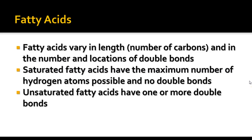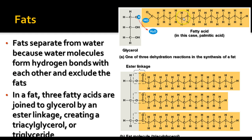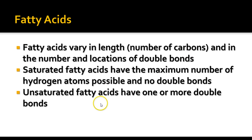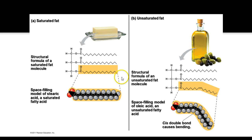Fatty acids vary in length by number of carbons, and also in the number and locations of double bonds. Saturated fatty acids have the maximum number of hydrogen atoms possible and no double bonds — every available position on a carbon atom is attached to a hydrogen, so they're saturated with hydrogen. These are generally solids at room temperature, like butter, because they pack together very tightly. Stearic acid is an example of a saturated fatty acid.